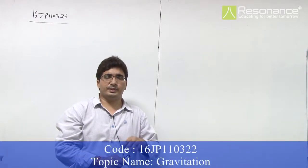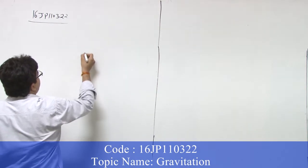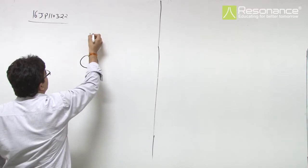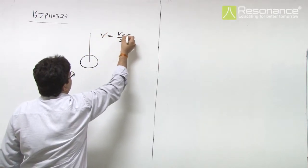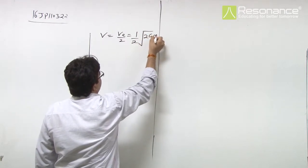In this question, a satellite is moving around Earth with a speed which is half of escape velocity. V = V_escape/2, which means V = (1/2)√(2GM/r).